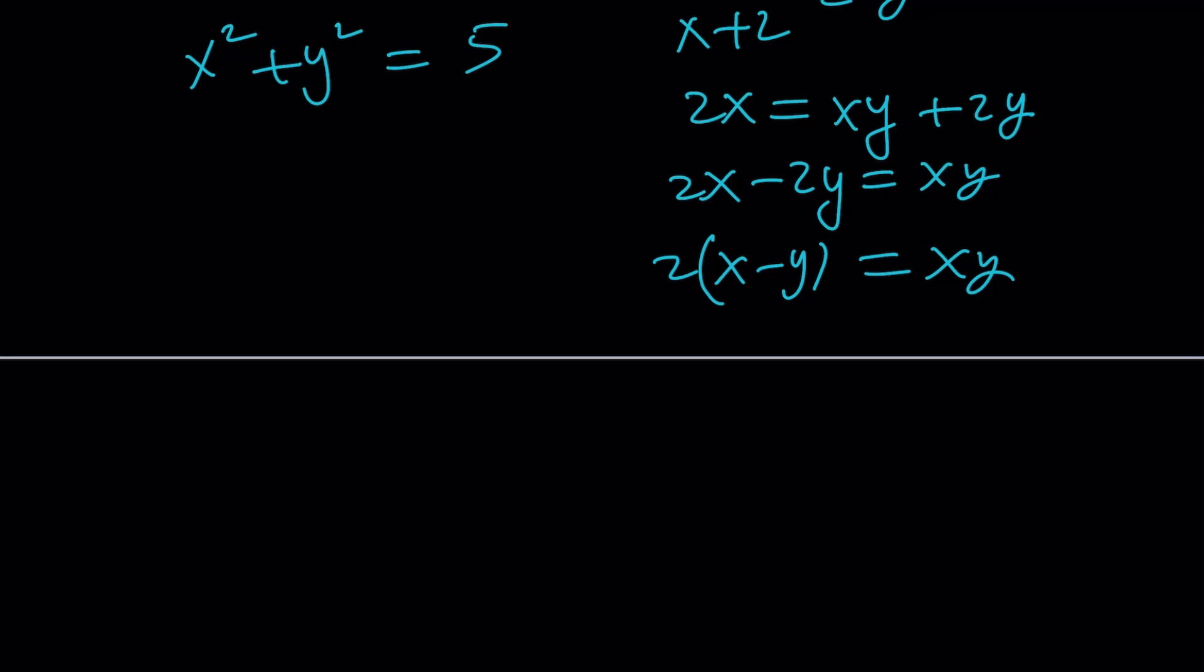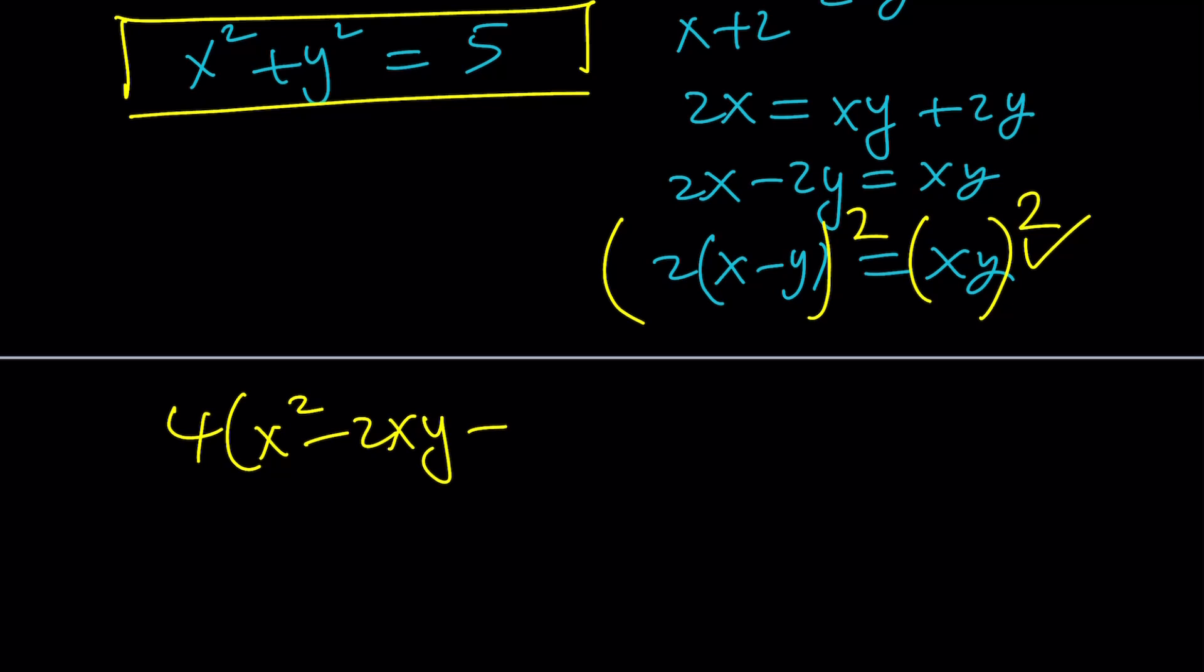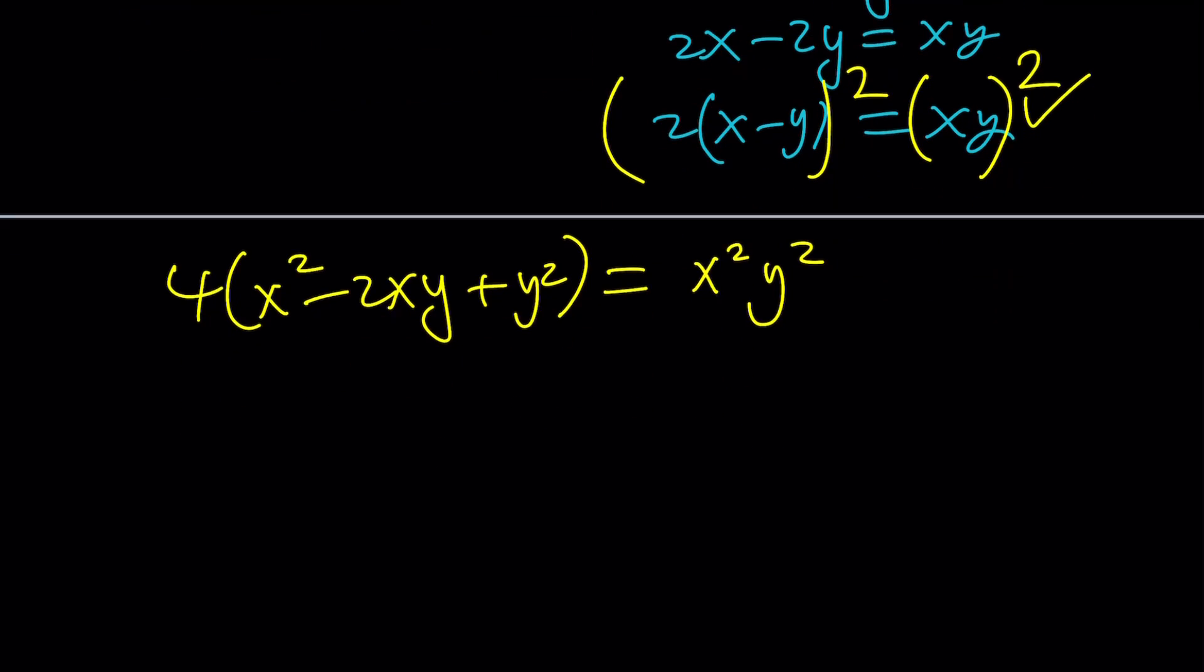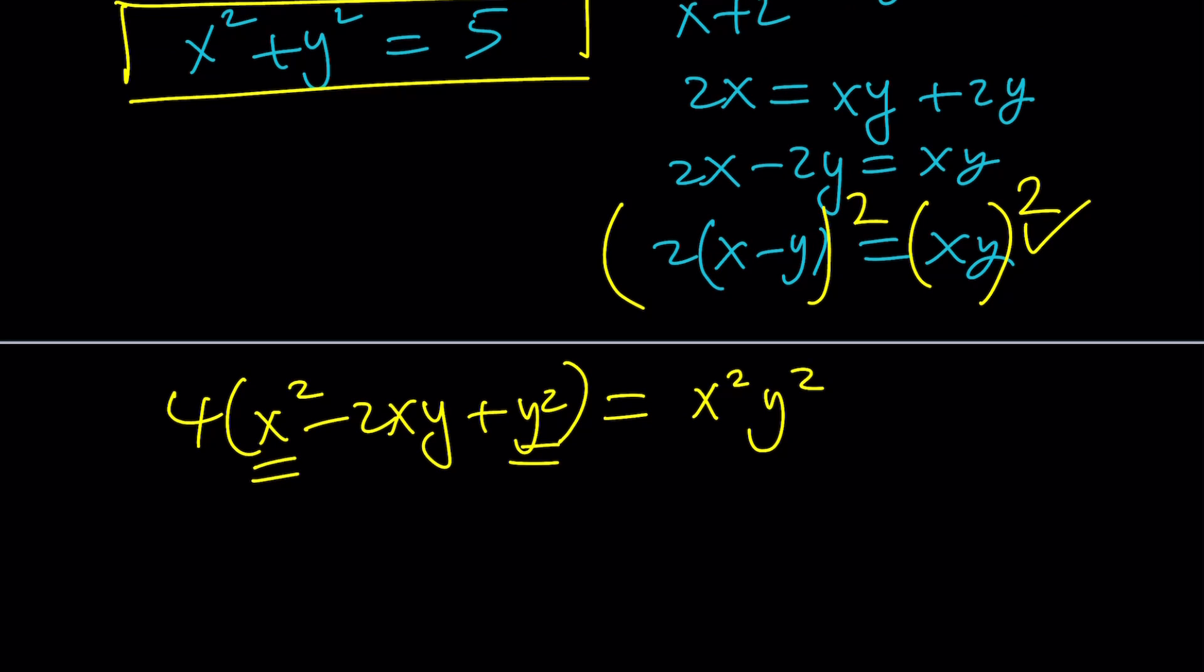And then I want to take out a 2, and guess what? I want to square both sides. Because notice that we have sum of two squares. If I square both sides here, I'll be getting that again. So, let's square both sides, and we'll be getting 4(x²-2xy+y²) = x²y².